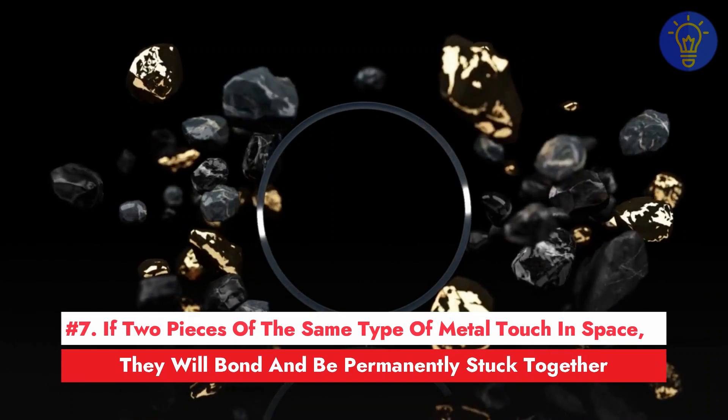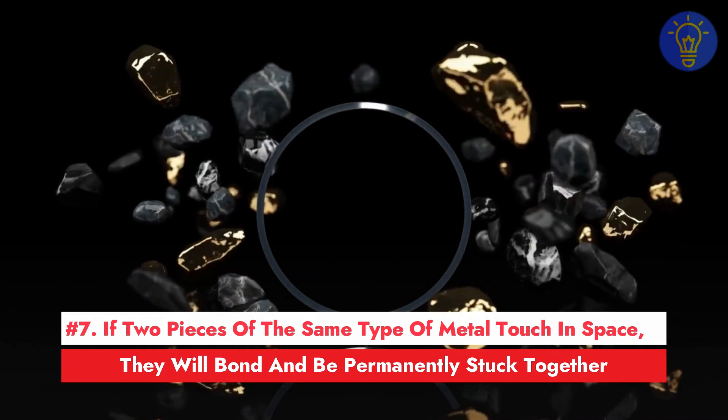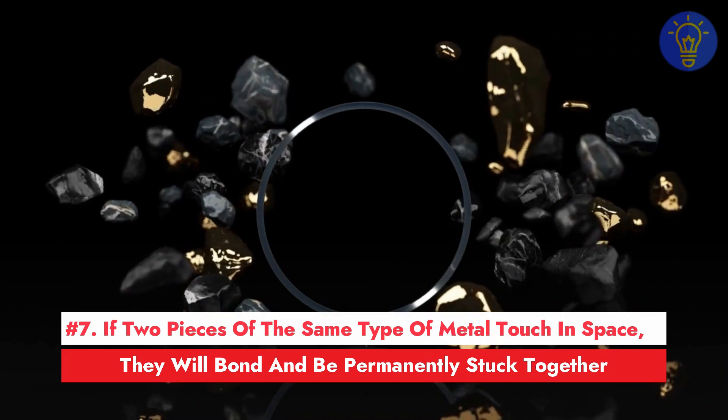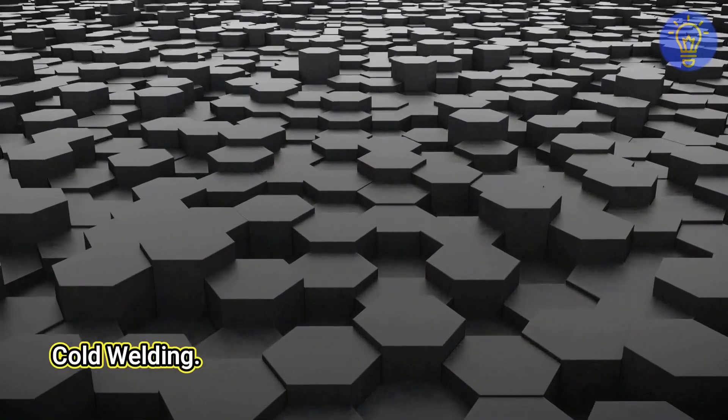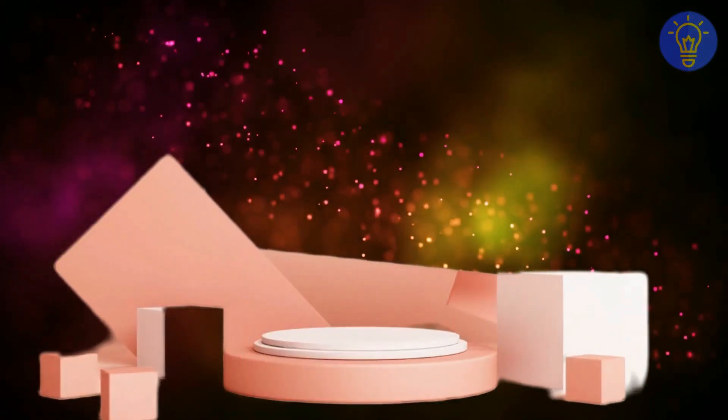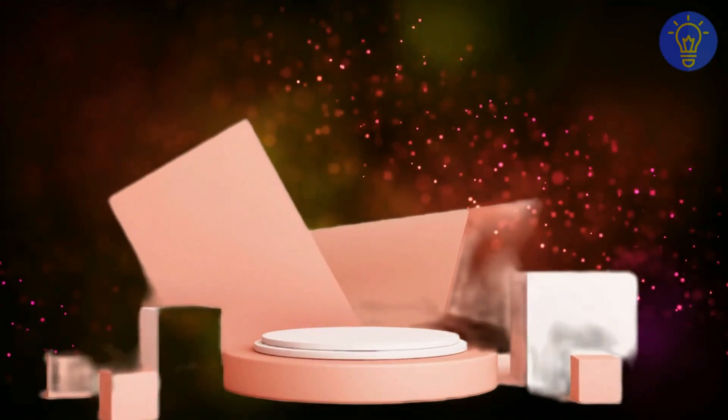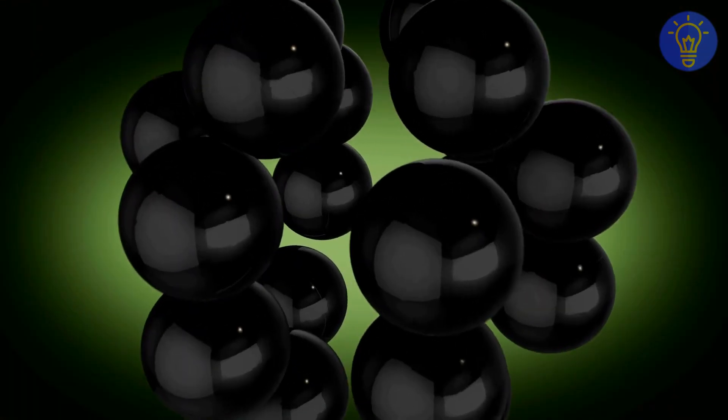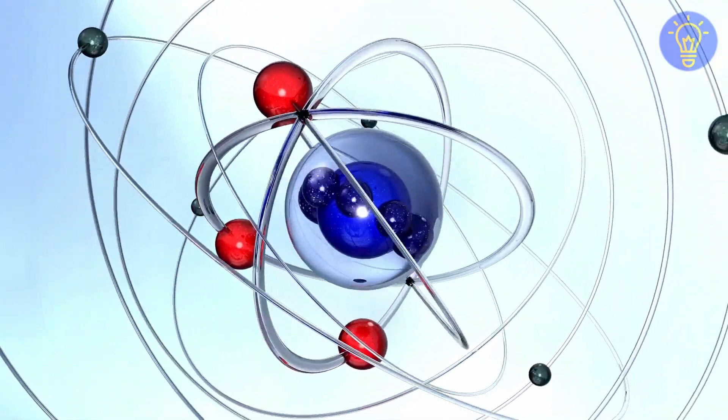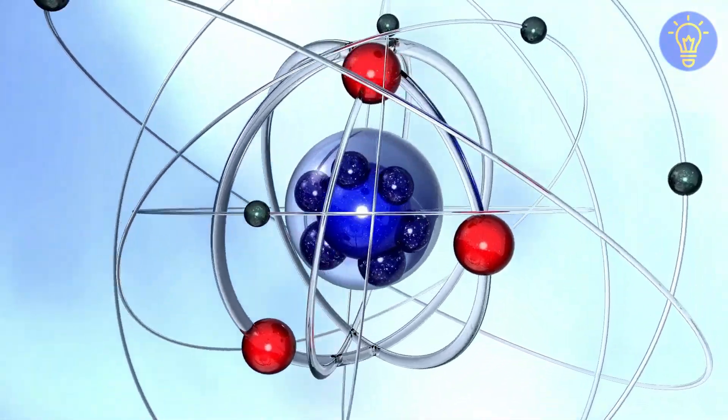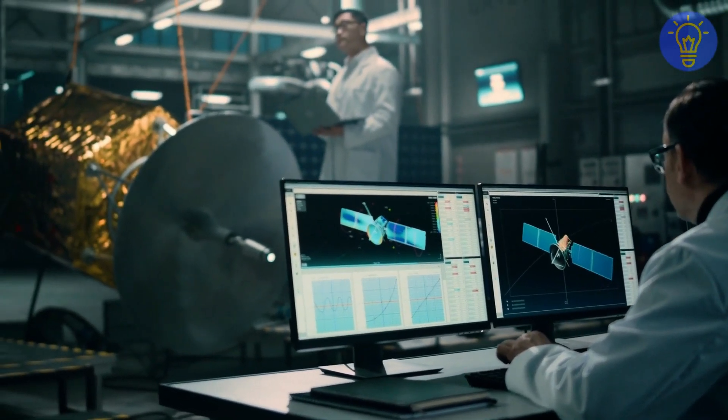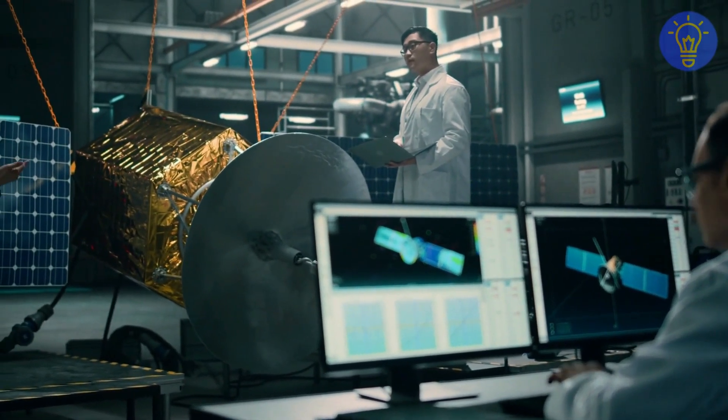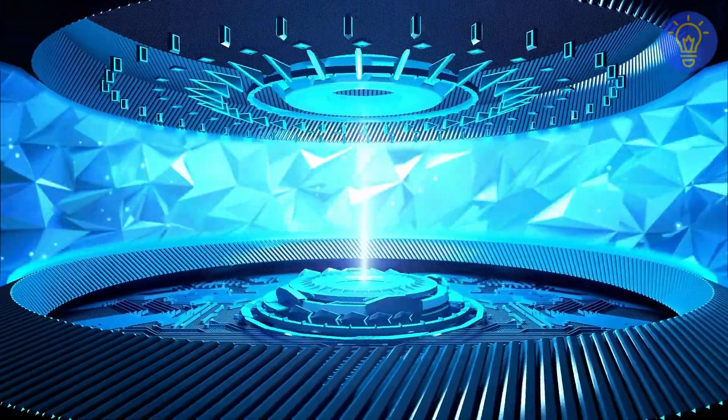Number 7. If two pieces of the same type of metal touch in space, they will bond and be permanently stuck together. This fantastic effect is called cold welding. It happens because the atoms of the individual pieces of metal have no way of knowing that they are different pieces of metal, so the lumps join together. This bonding wouldn't happen on Earth because air and water separate the pieces. However, the effect has a lot of implications for spacecraft construction and the future of metal-based buildings in vacuums.